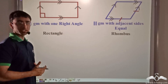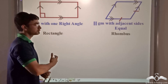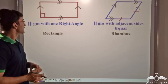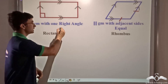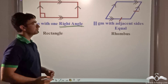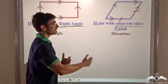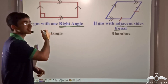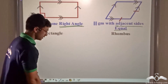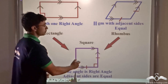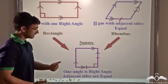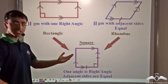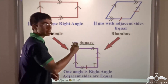Combining the properties of a rectangle — a parallelogram with one right angle — and a rhombus — a parallelogram with adjacent sides equal — we get a parallelogram that has both one right angle and equal adjacent sides. This special kind of parallelogram, where opposite sides are parallel, one angle is 90 degrees, and adjacent sides are equal, is known as a square.